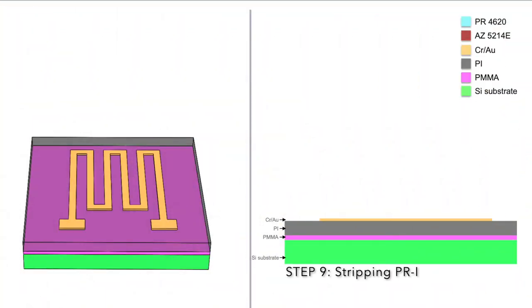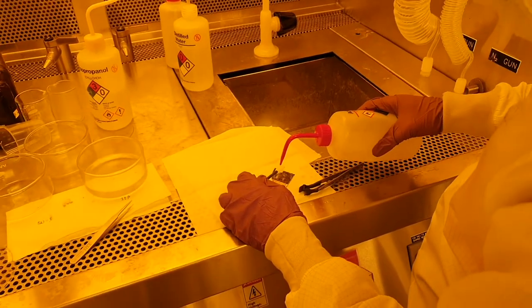We are now done with using the photoresist layer and can strip it off from the substrate gently using an acetone swab.